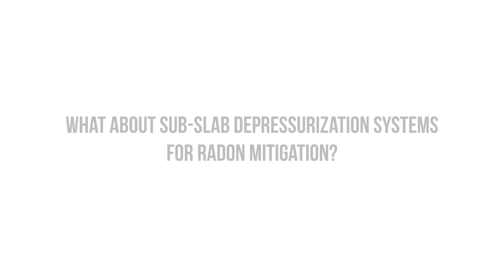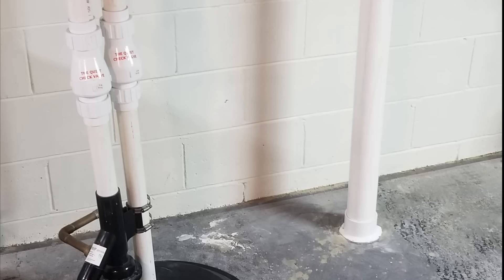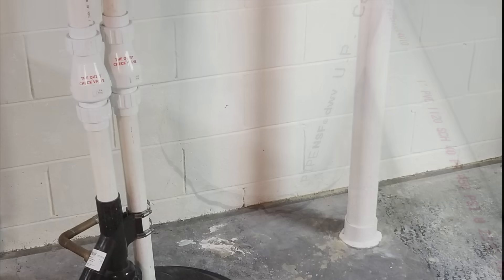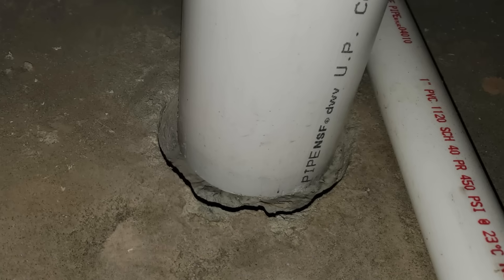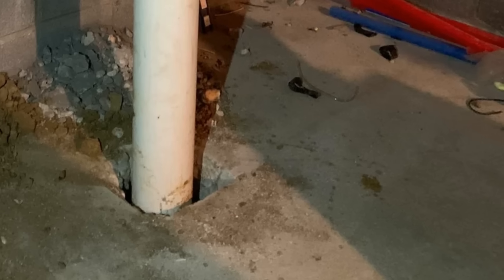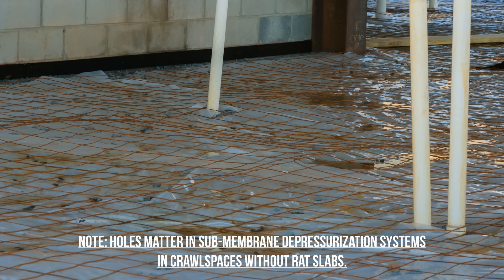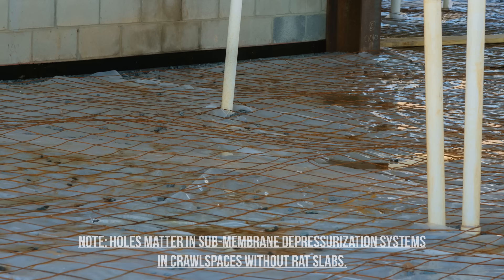What about vapor barriers in sub-slab depressurization systems — do holes matter? The answer is no, as the slab serves as the air barrier and will control soil gas migration in combination with a passive or active radon vent to place the space below the slab under negative pressure. We want to make sure that we're sealing all of the joints, seams, and penetrations in the slab, but the vapor barrier itself is not preventing the radon from getting inside.